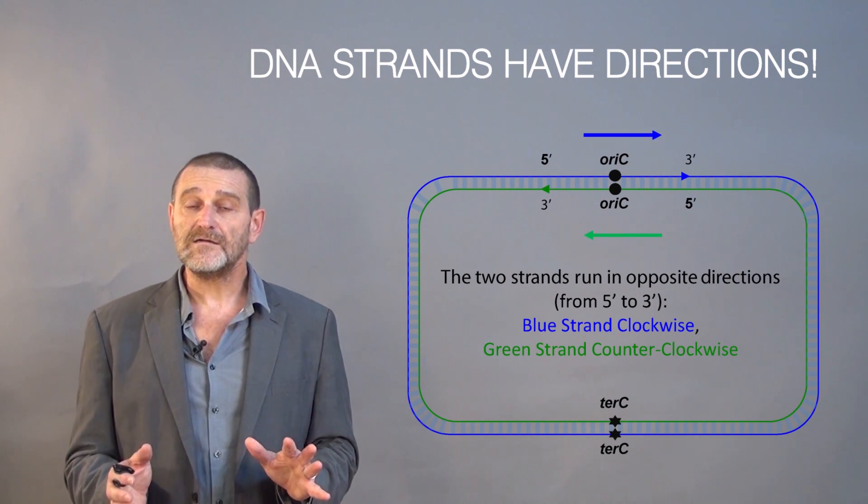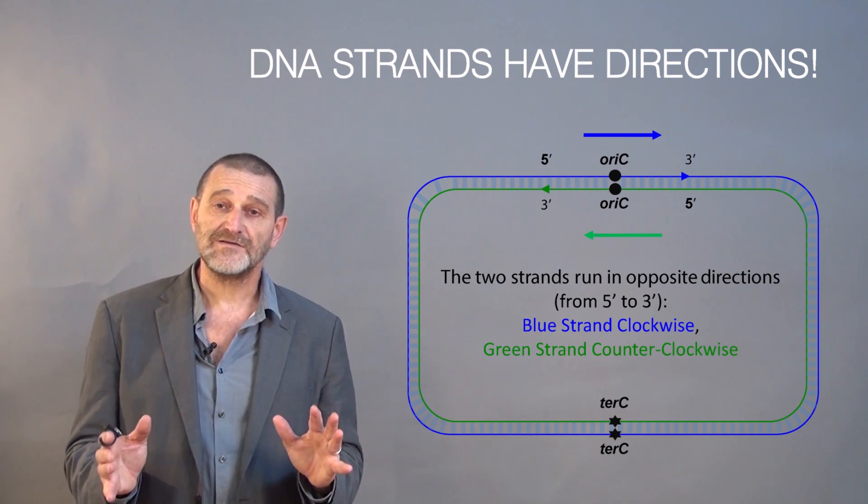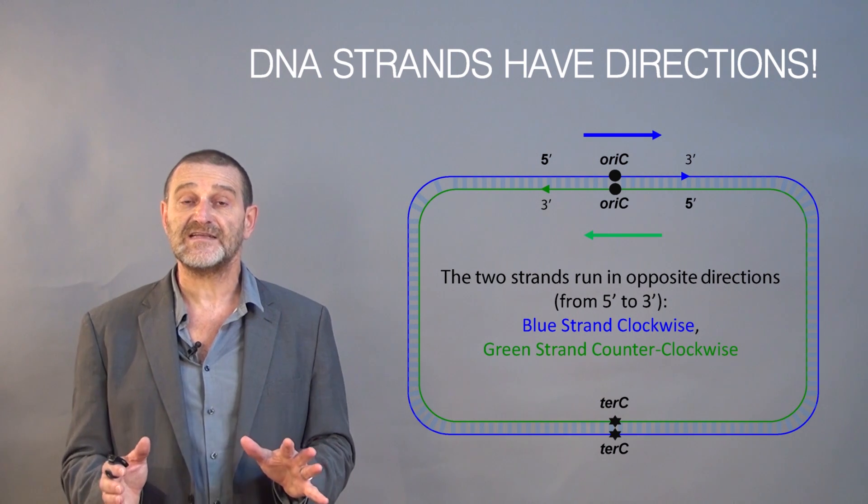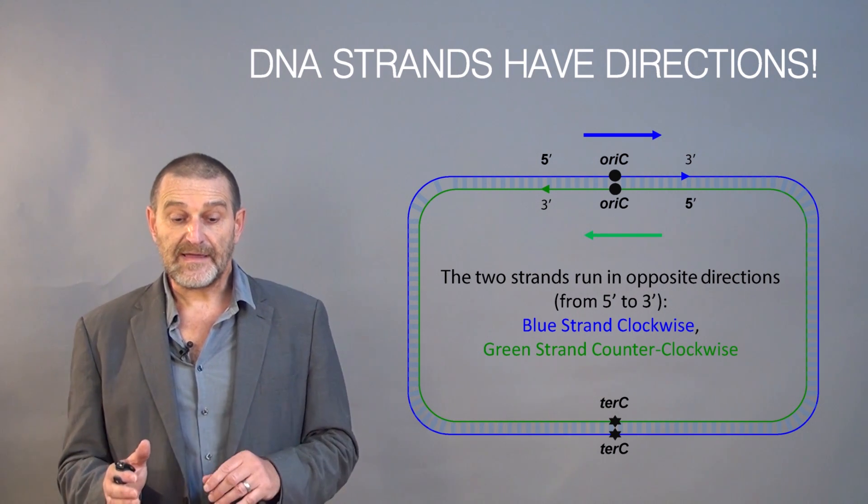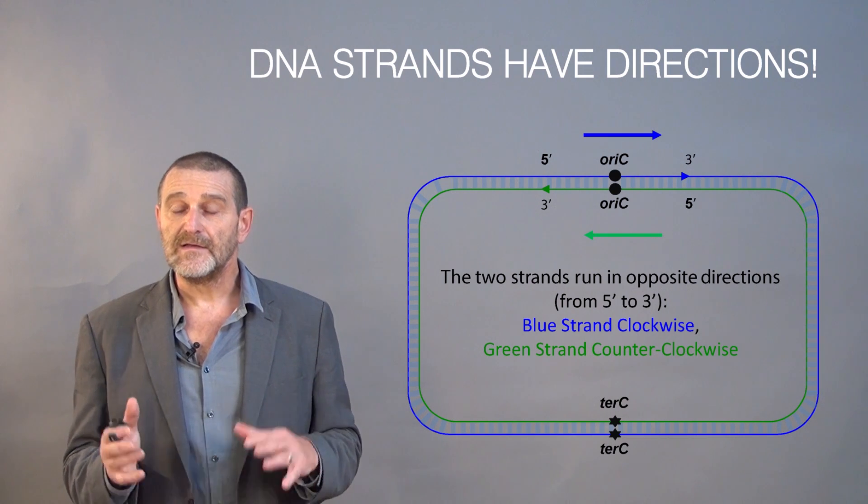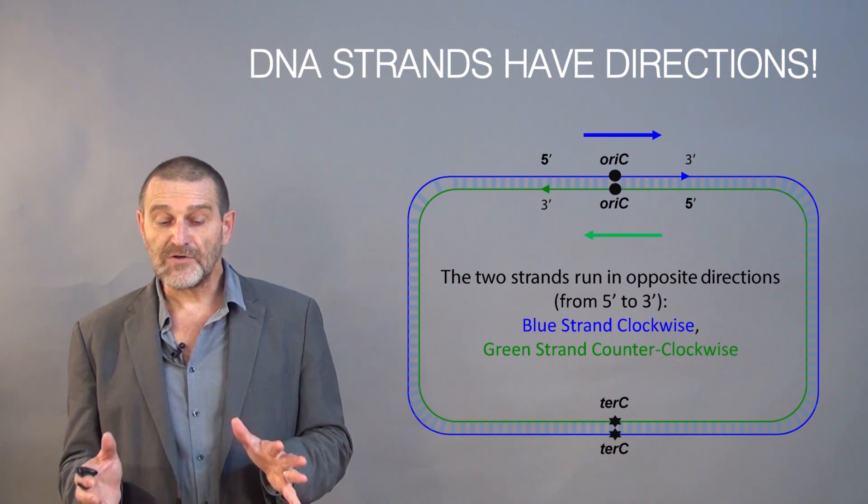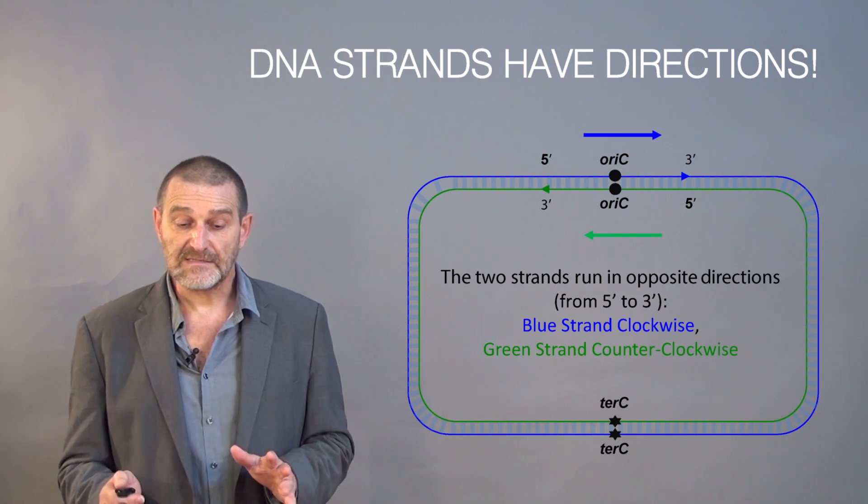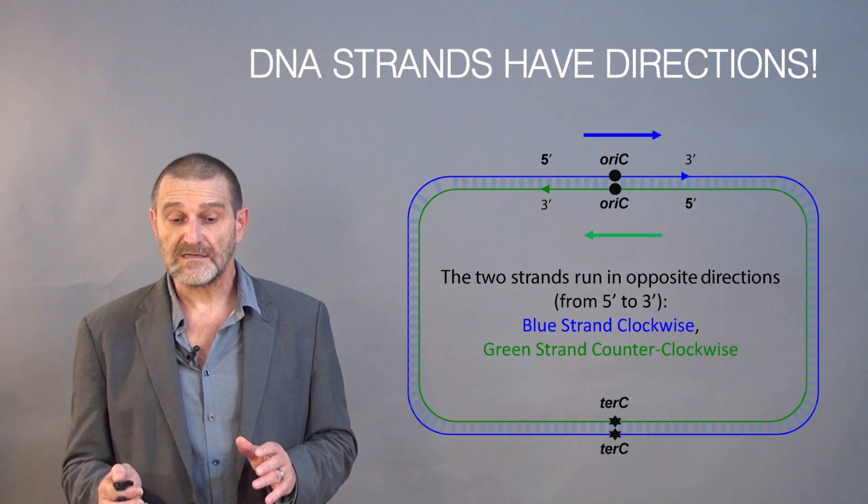The first thing to remind ourselves is that DNA strands have directions. The two strands of DNA run in opposite directions. Here on this slide, the blue strand runs clockwise and the green strand runs counterclockwise.